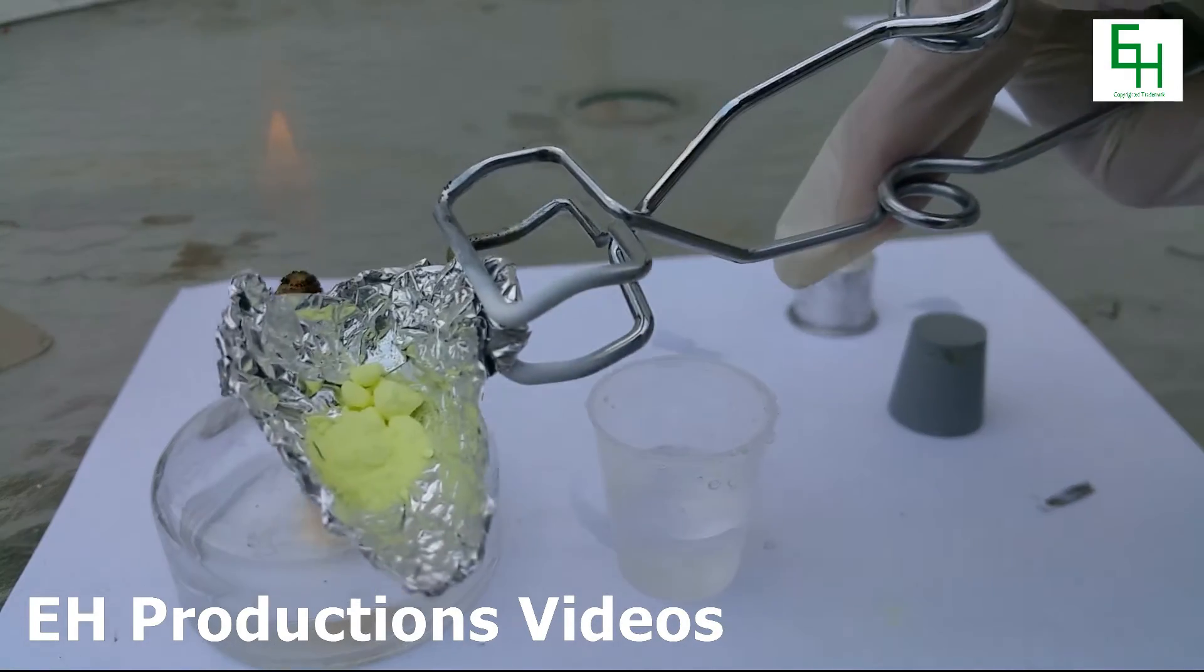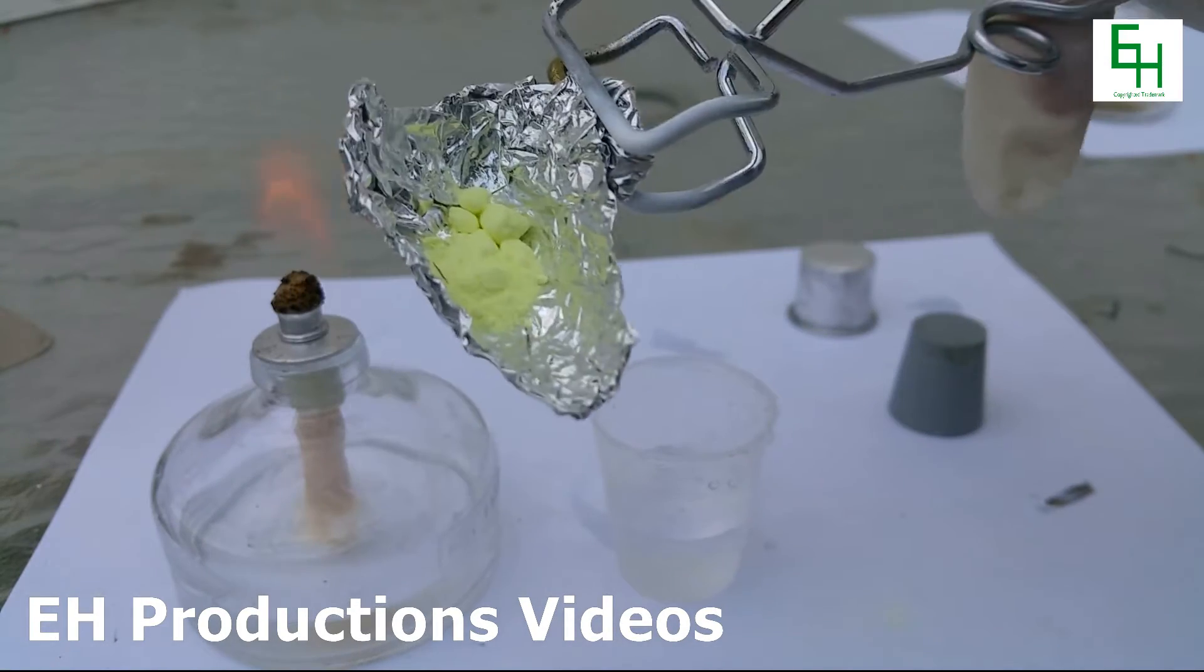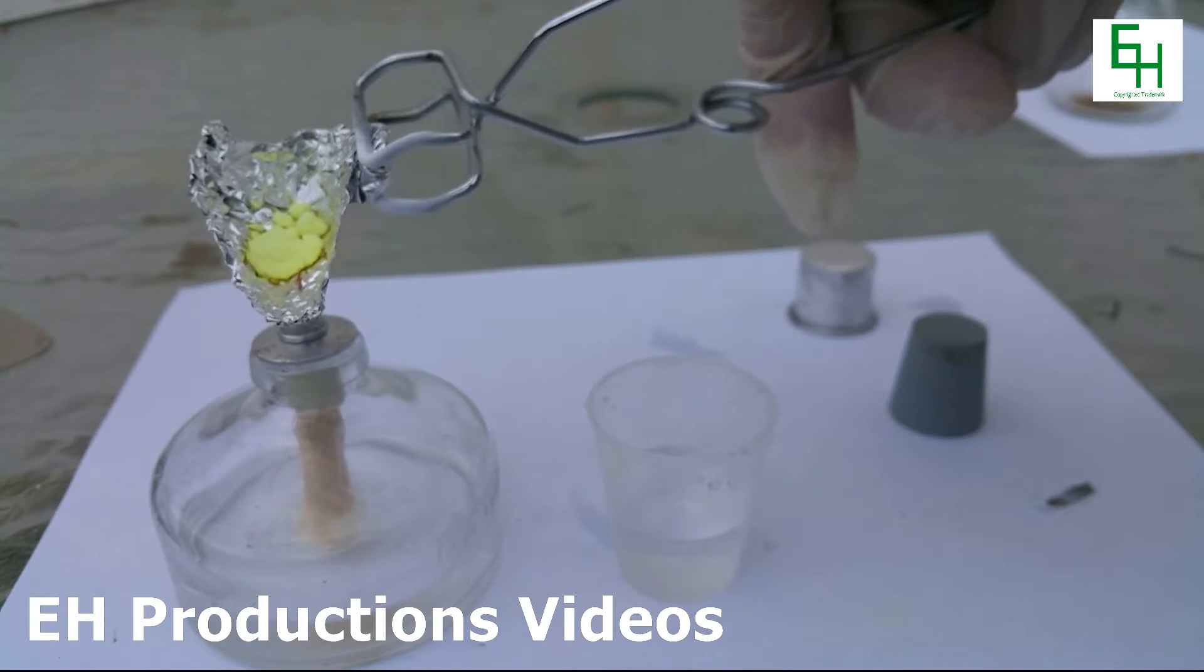Next get some sulfur and I'm going to put it in a crucible I made out of aluminum foil. Next I'm going to heat it up until the sulfur melts.